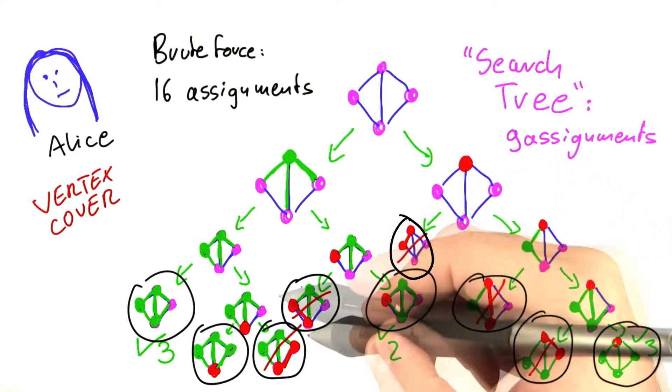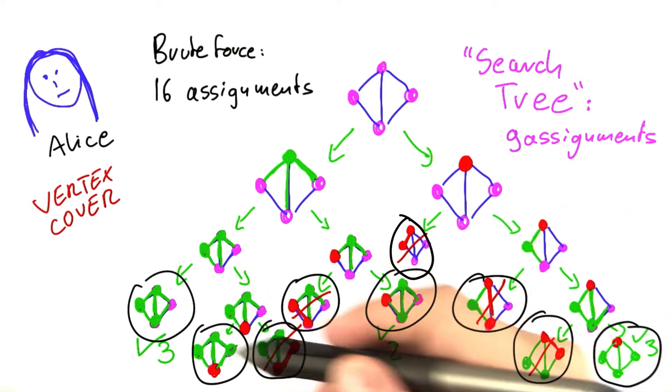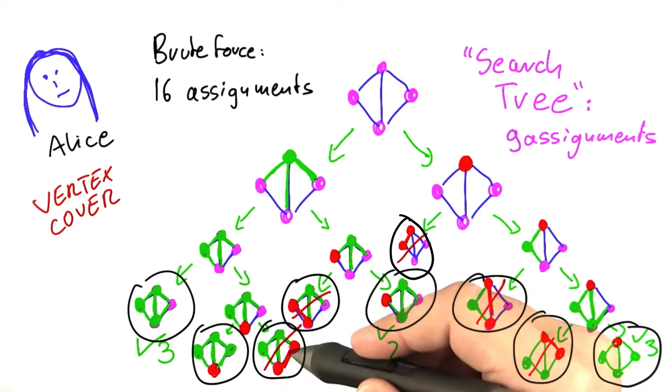One interesting thing to consider is the following. There were only two cases when we stopped further exploration in this tree here. One case was that we had found a valid vertex cover. The other one was when we considered an edge that could not be covered anymore.